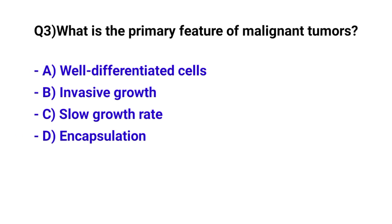Question number 3. What is the primary feature of malignant tumors? The correct option is B. Invasive growth.